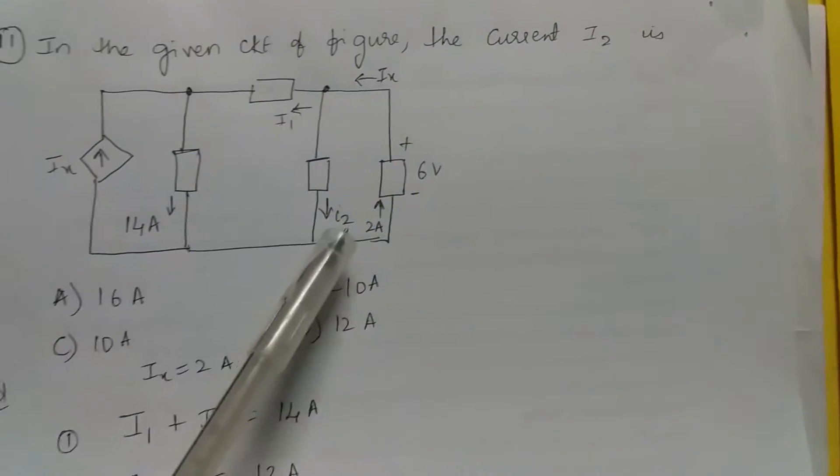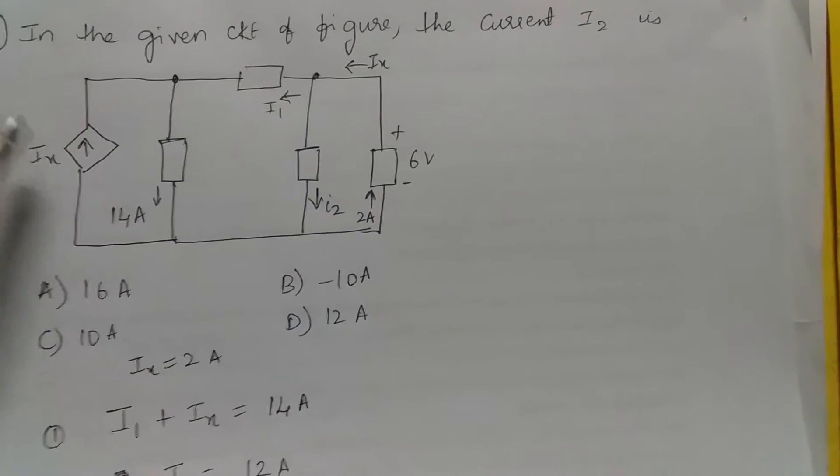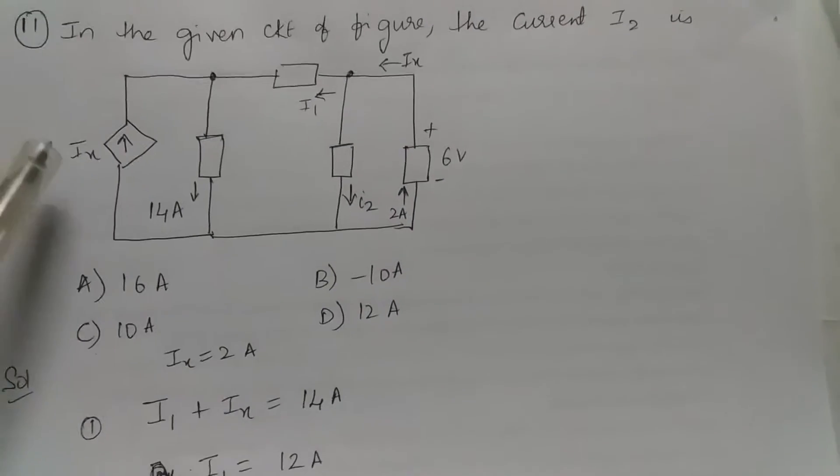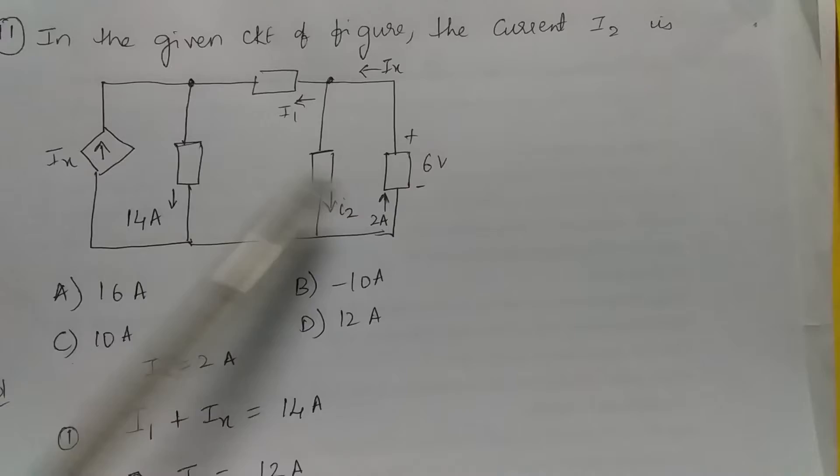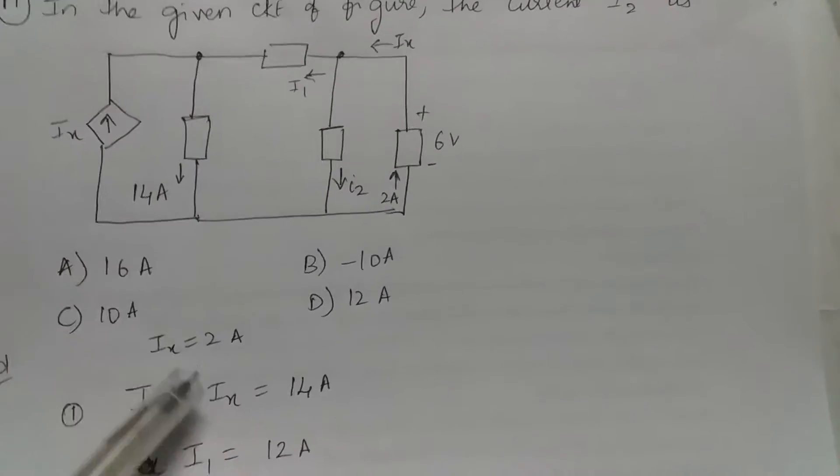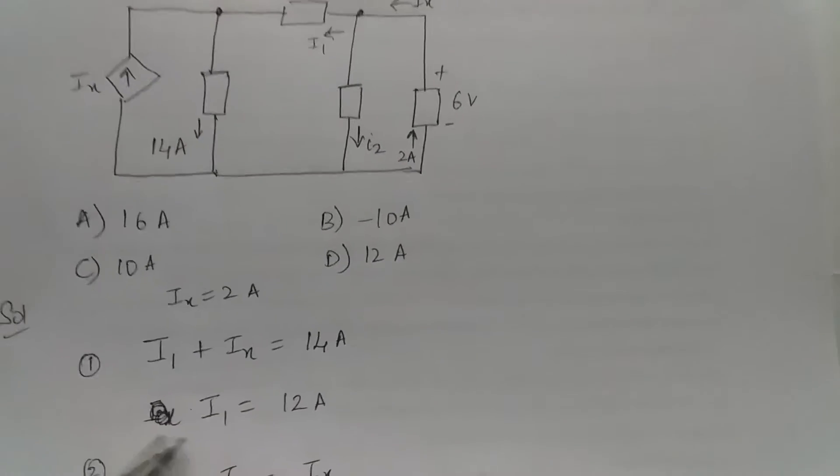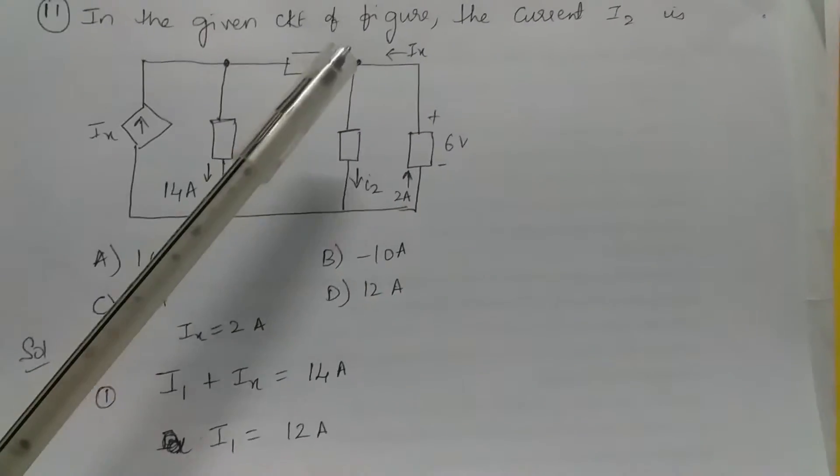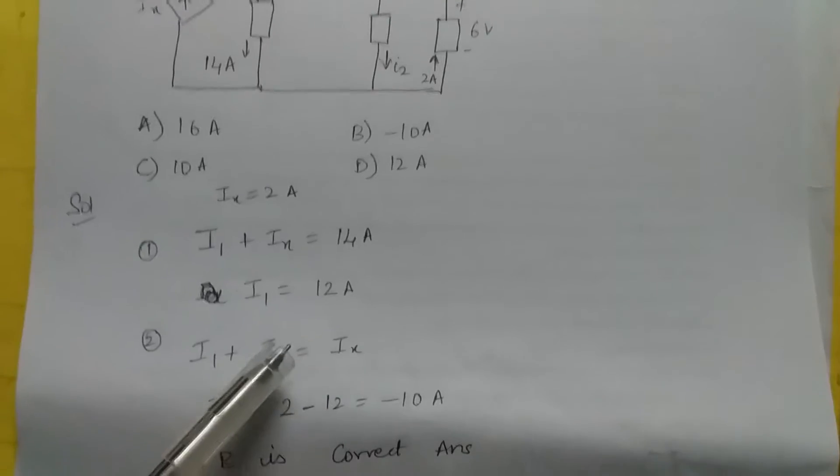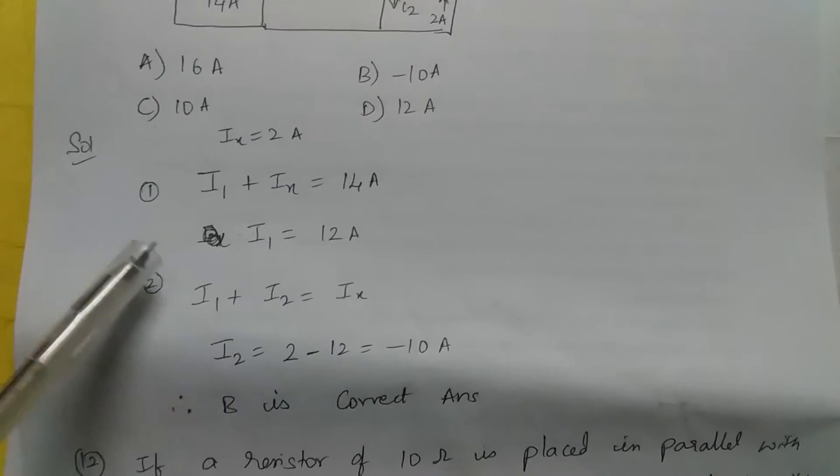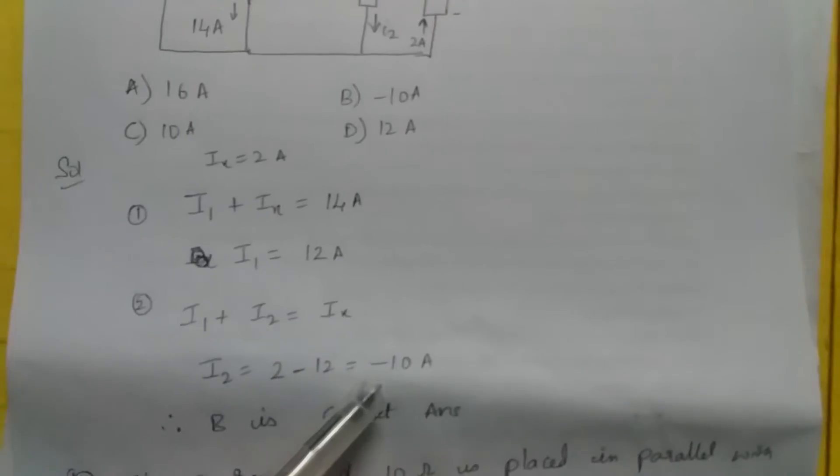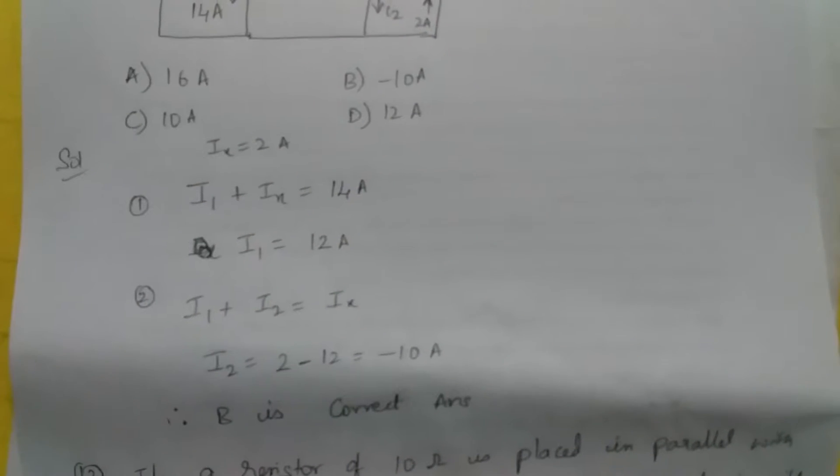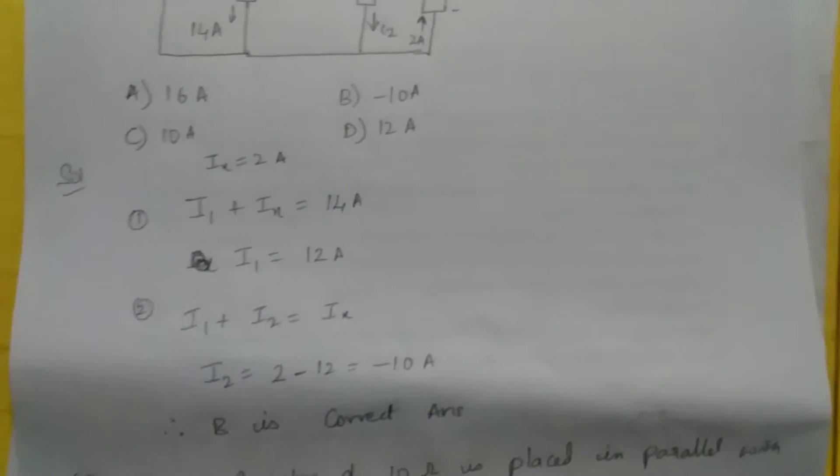If you see, I2 is leaving the junction, I1 is leaving the junction, so Ix equals I1 plus I2. You know what Ix is - it is 2 amps. So I1 plus Ix is 14 amps, we got it, so I1 is 12 amps. Now you have one more equation: I1 plus I2 is Ix. You know I1 and Ix, substitute the values, you get I2 equals minus 10 milliamps. So B is the correct answer.